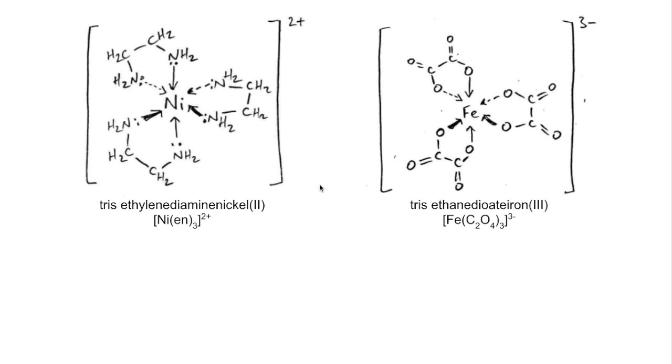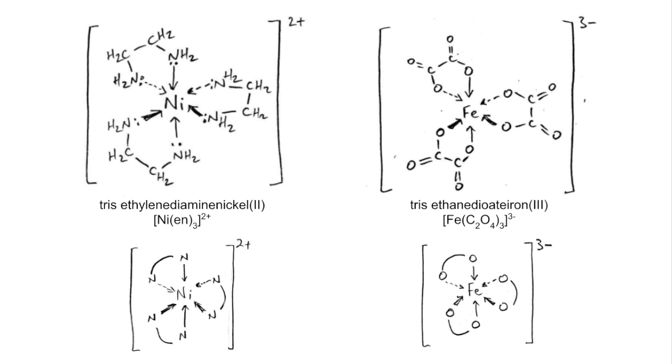You'll be pleased to know that you can actually draw these complexes like this, so you can simplify it just by showing the attachments via those nitrogens there. And likewise, the ethanedioate complex iron can be drawn like that. Still, we've got octahedral shape, I'm sure you can see that, 90 degree bond angles, and coordination number is still 6. Even though we've just got three ligands, there are still 6 coordinate bonds.